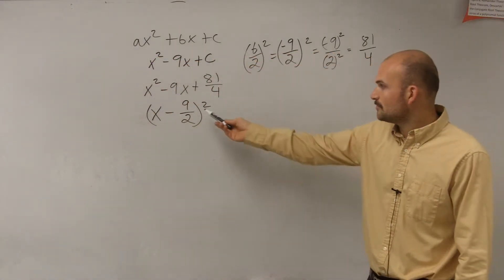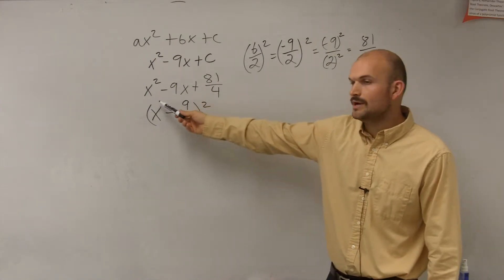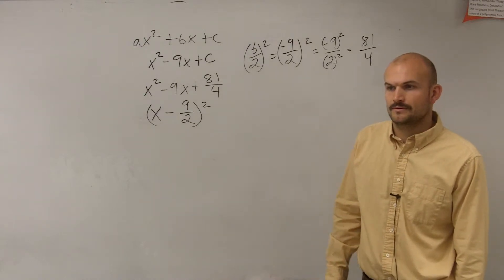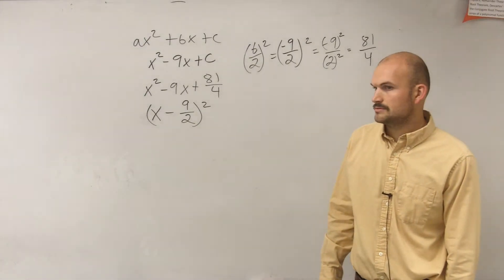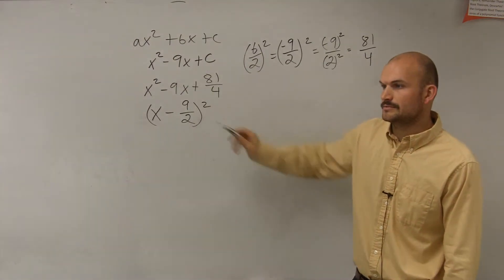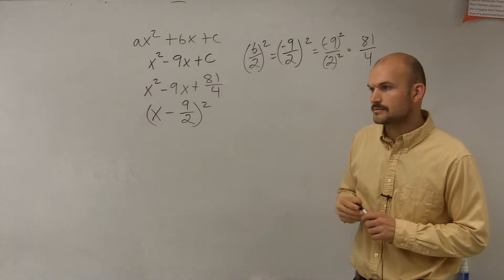Now, if you were to multiply this out, x minus 9 divided by 2 squared is going to give you x² minus 9x plus 81 over 4. Does that make sense? Well, they're not asking us to solve it right now. They're just asking us to find the value of c that makes it.